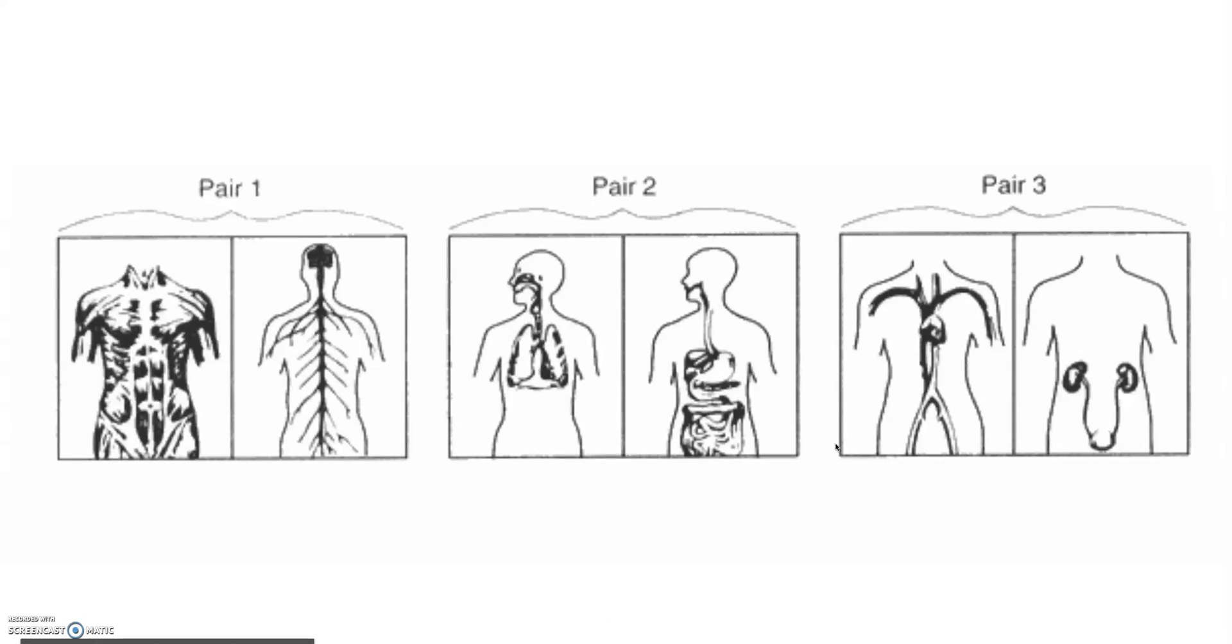Now remember this question, you're going to be asked to choose pair one, pair two, or pair three and discuss how these human body systems work together. Now this is the muscular system.